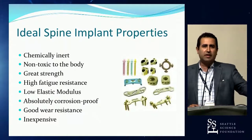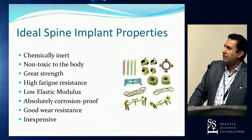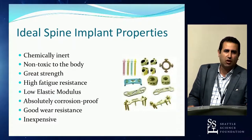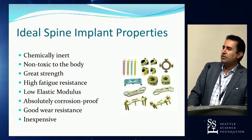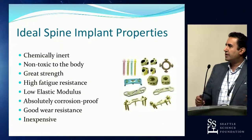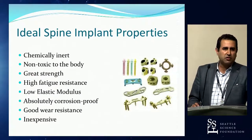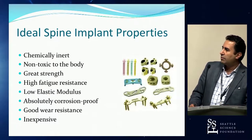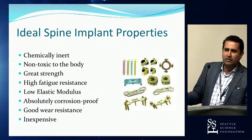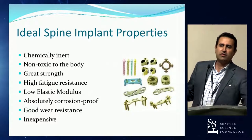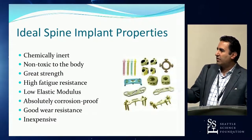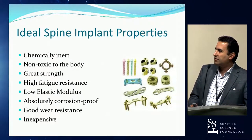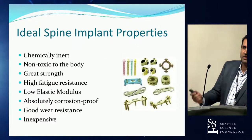The ideal implant properties: it must be inert — it can't leach or become toxic. It must be strong enough to achieve its goals, resistant to many load cycles, and have a low elastic modulus approximating bone. It must resist corrosion, lasting decades without oxidation, resist wear, and most importantly be inexpensive enough to use.